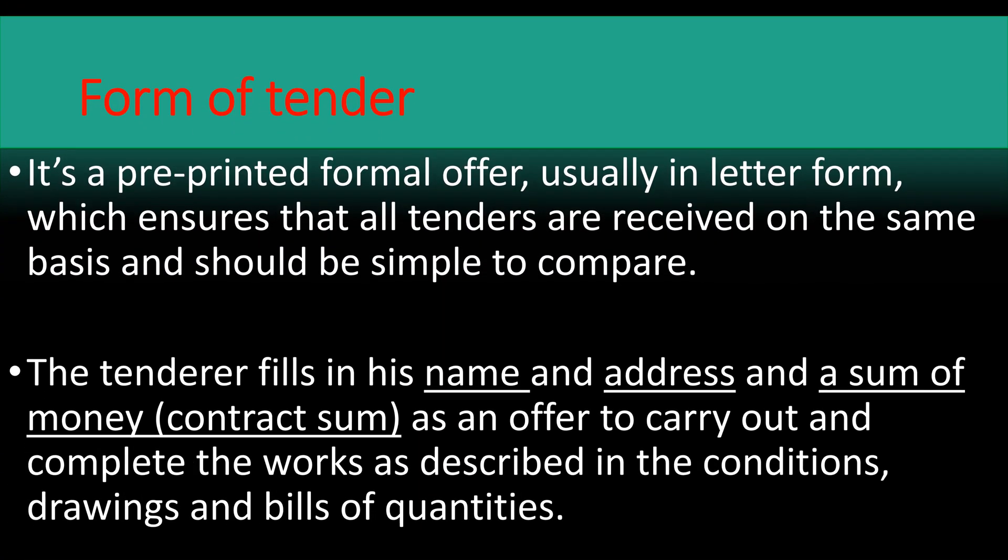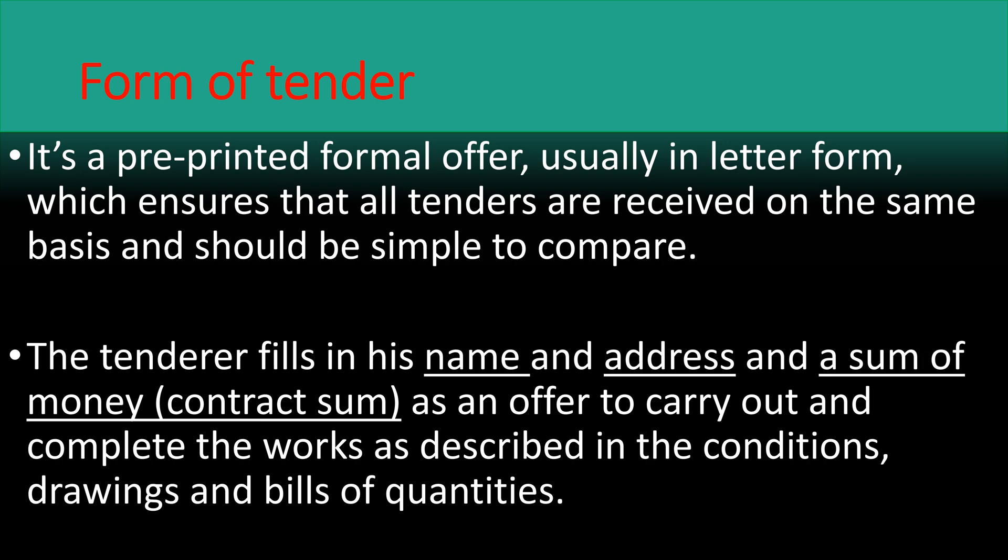The fourth document is the form of tender. It is a pre-printed formal offer, usually in a letter form, which ensures that all tenders are received on the same basis and should be simple to compare. The tenderer fills in his name and address and the sum of money — that is the contract sum — as an offer to carry out and complete the works as described in the conditions, drawings, and bill of quantities. All tenderers are required to fill the form of tender. It's like an offer he's giving to the client that he's ready to take up the work.